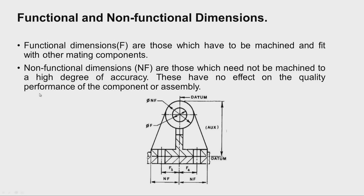Tolerance is a compromise between the accuracy required for proper functioning and the ability to economically produce that accuracy. When dimensions are specified, there are functional dimensions (f) and non-functional dimensions (nf). Non-functional dimensions — such as outer surfaces where no mating part comes in contact — need only open tolerances. Functional dimensions, such as a bore in which a shaft rotates or slides, require carefully specified tolerances.